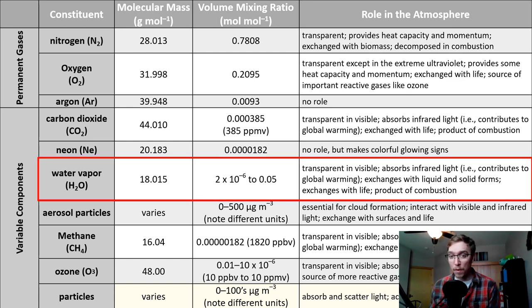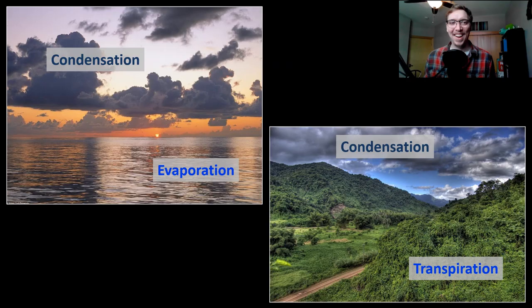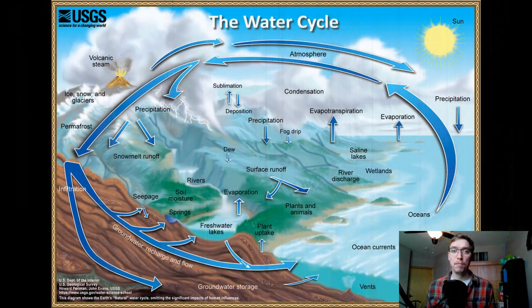Next one we're going to look at, water vapor. It absorbs infrared light, contributing to greenhouse effect. Exchanges with liquid and solid form, exchanges with life, it's a product of combustion. Condensation, really important. Without water and water vapor, we would not be here. So where does it come from and where does it go? Things like condensation and evaporation or condensation and transpiration lead to the exchange of water from our surface to our atmosphere.